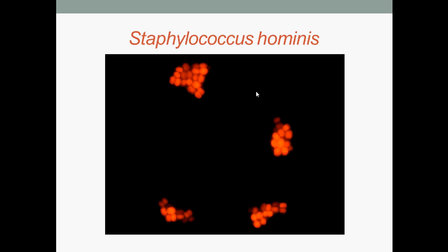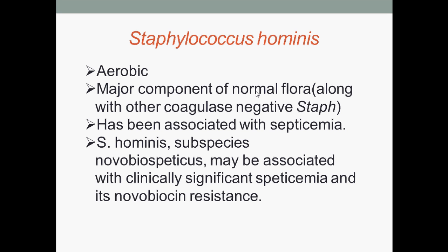Here is a microscopic view of this species. They are aerobic and are a major component of normal flora. Along with other coagulase-negative staph, they have been associated with septicemia. A subspecies, novobiospaticus, may be associated with clinically significant septicemia and its resistance to novobiocin.